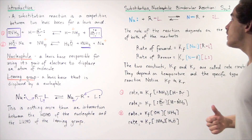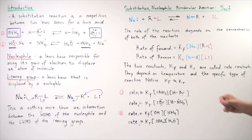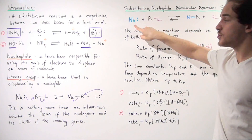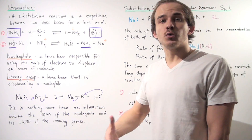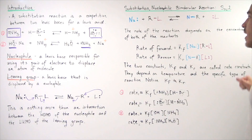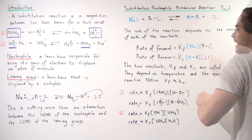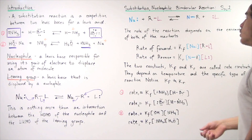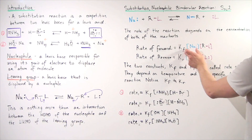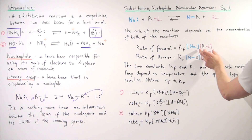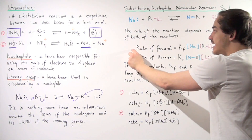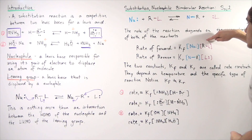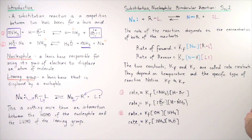We said that our SN2 reaction is bimolecular. That simply means the rate of the reaction depends on the concentration of both reactants — this concentration and this concentration. So if we were to write the rate law, or the rate of the reaction, the rate of the forward reaction is given by KF, the constant for the forward reaction, multiplied by the concentration of the nucleophile, multiplied by the concentration of our leaving group compound. If we increase either of these reactants, our rate of forward reaction will increase.